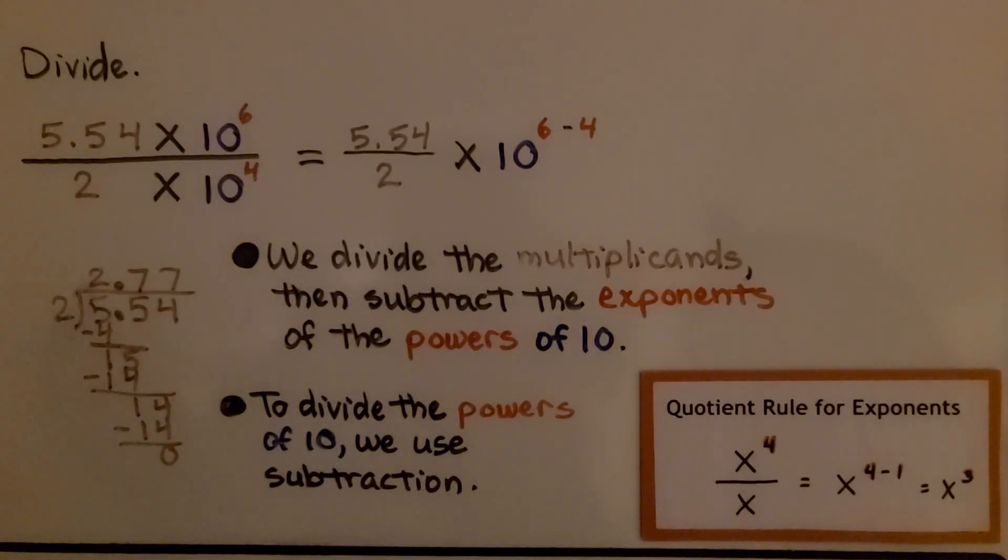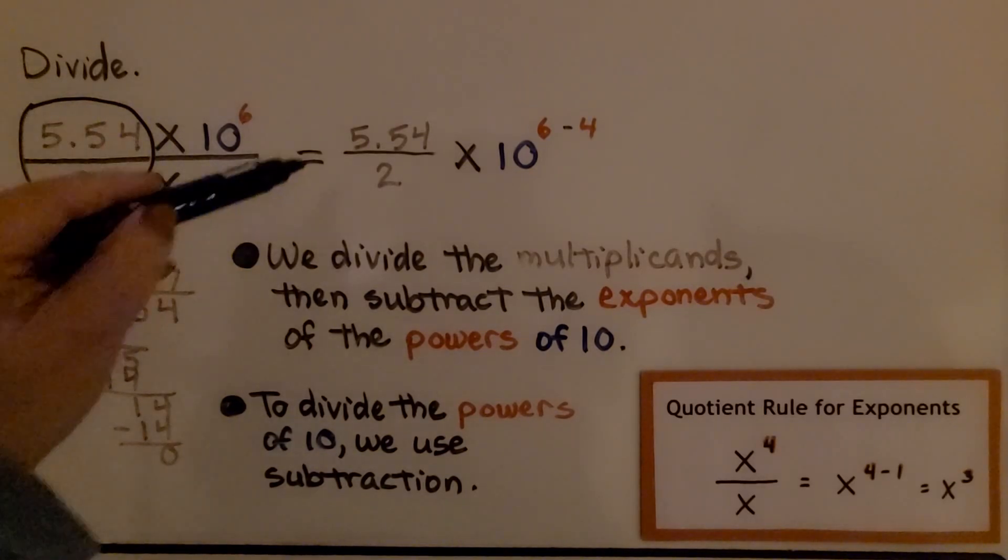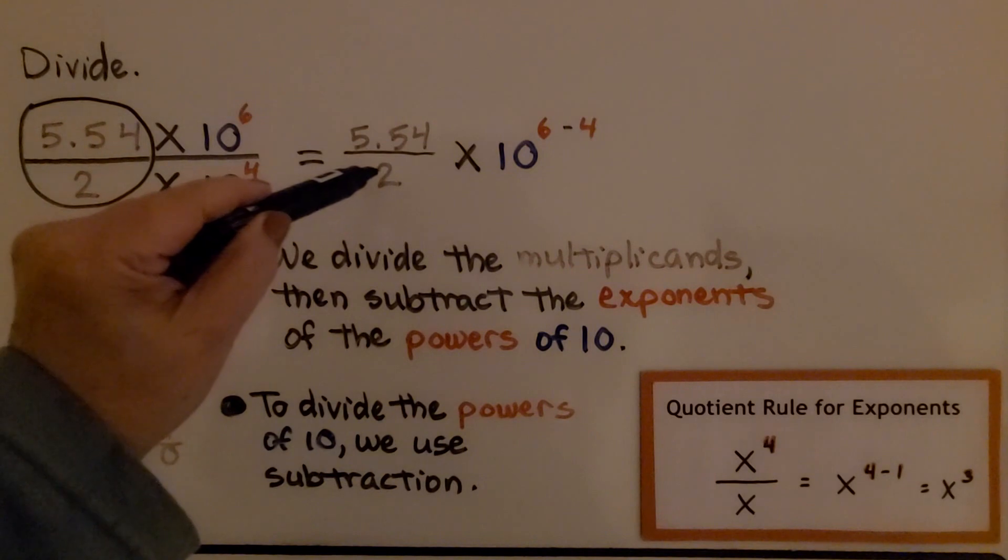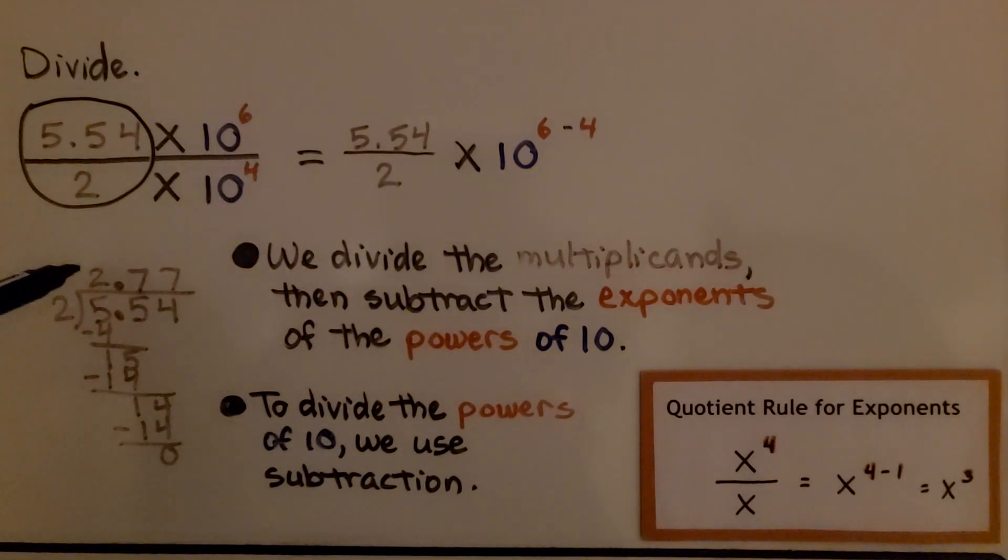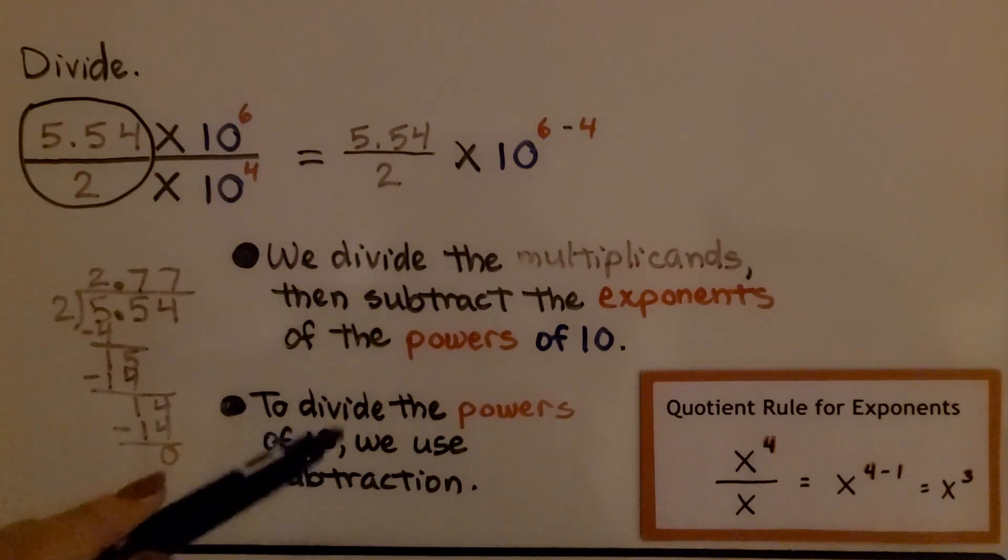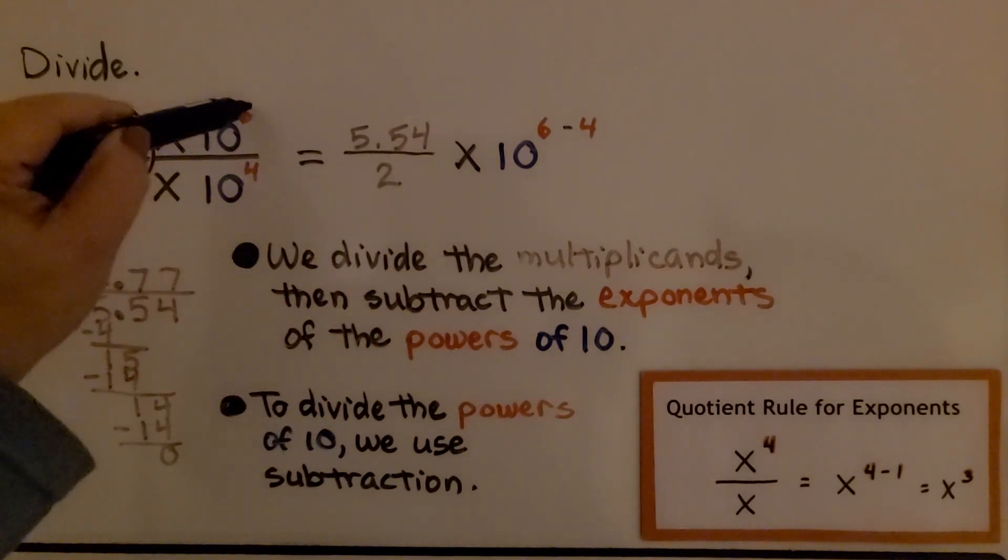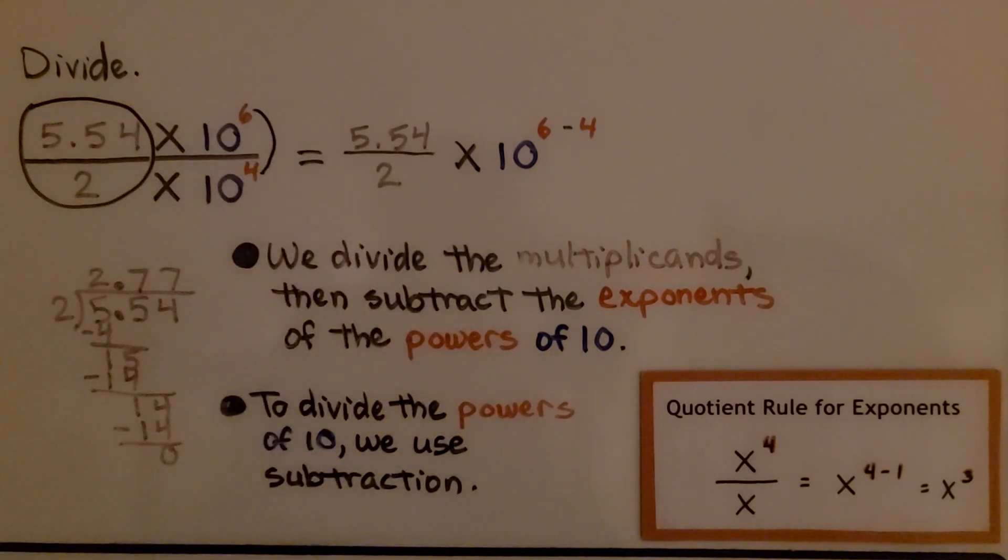So here's exactly what we did. We split this part away and did the division. 5.54 divided by 2, which came out to 2.77. And we subtracted 6 minus 4 and that gave us 2.77 times 10 raised to the 2nd power.